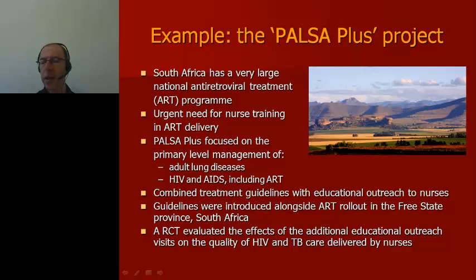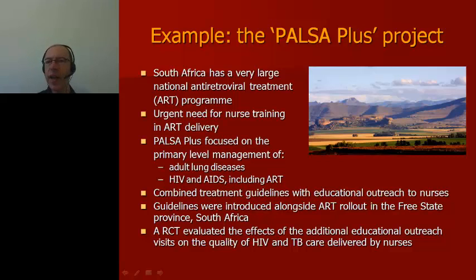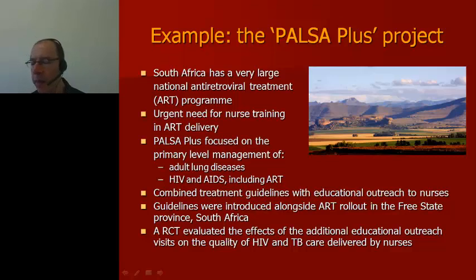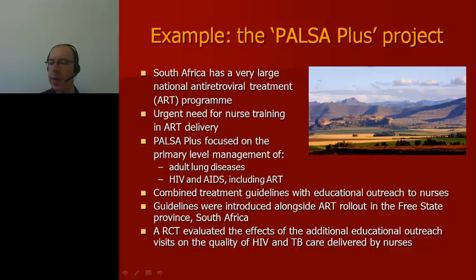The Pulse of Plast intervention combined, on the one hand, clinical treatment guidelines for nurses with, on the other hand, educational outreach to these primary care practitioners in the clinics in which they work in communities. The program focused on the primary level management of adult lung diseases and HIV and AIDS, including antiretroviral treatment. It attempted to enskill nurses and give them greater clinical responsibility for the management of patients in their care.